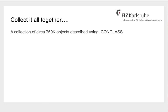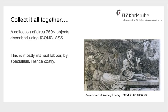The global community of IconClass users have been describing their content for more than 60 years. A very large collection of items have been described, and we have tried to collect as many as we can. At the moment, we have around 750,000 objects, both textual and visual, that have been described using IconClass. This is mostly manual labour done by specialists, and hence a very costly endeavour.